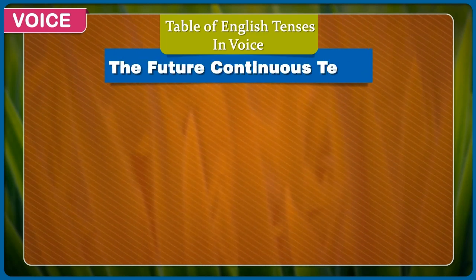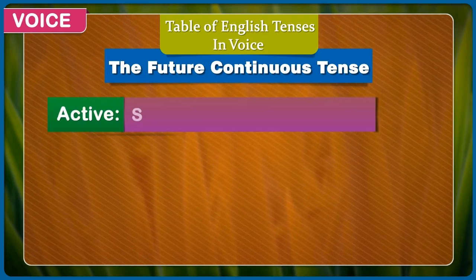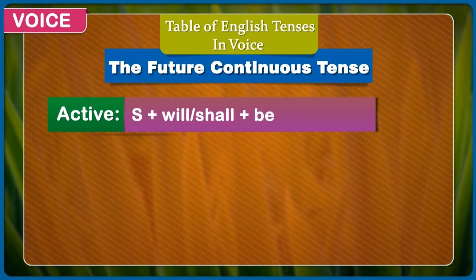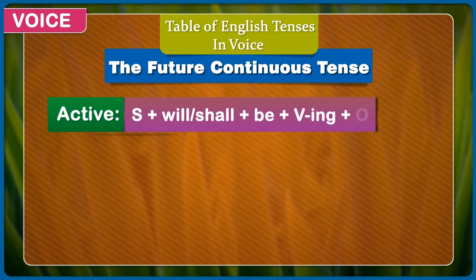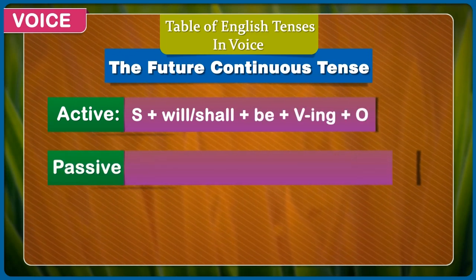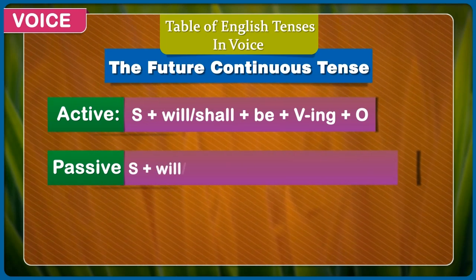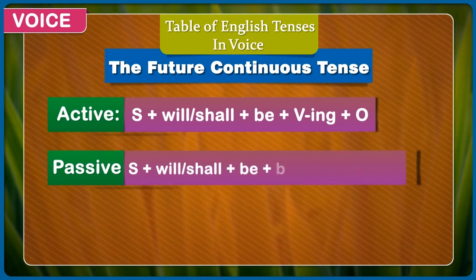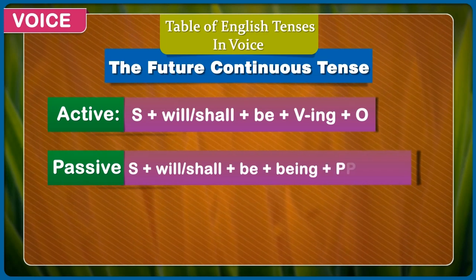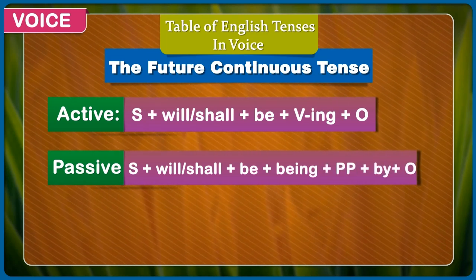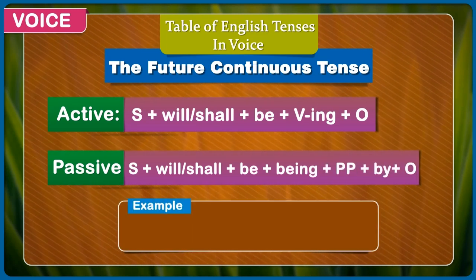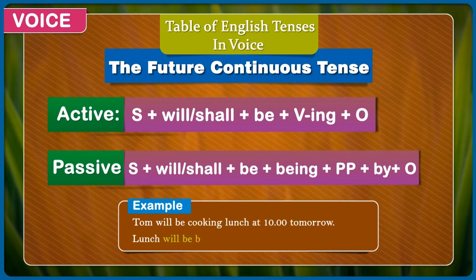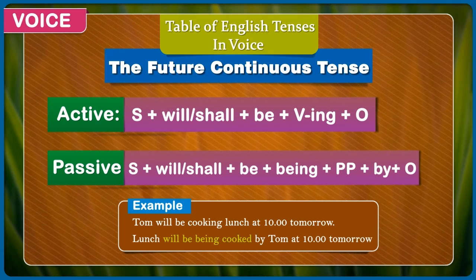The future continuous tense. Active voice: subject + will/shall + be + verb with -ing + object. Passive: subject + will/shall + be + being + past participle + by + object. Example: Tom will be cooking lunch at 10 tomorrow. Lunch will be being cooked by Tom at 10 tomorrow.